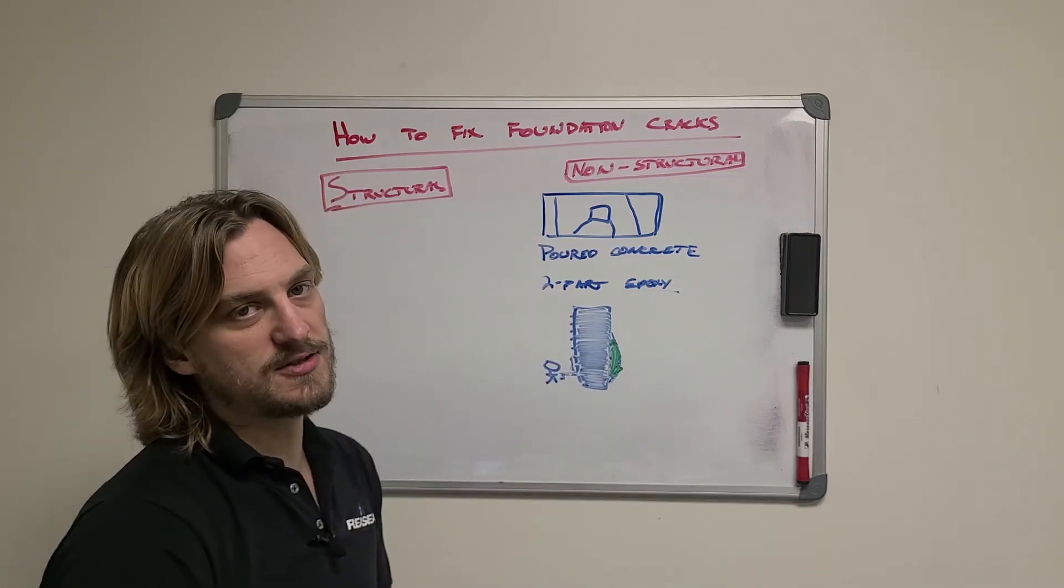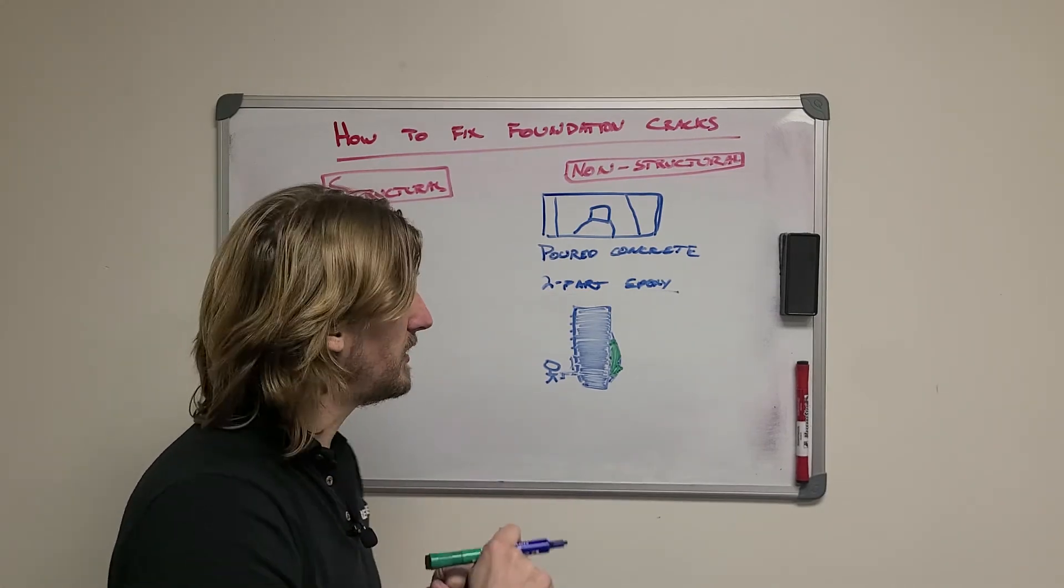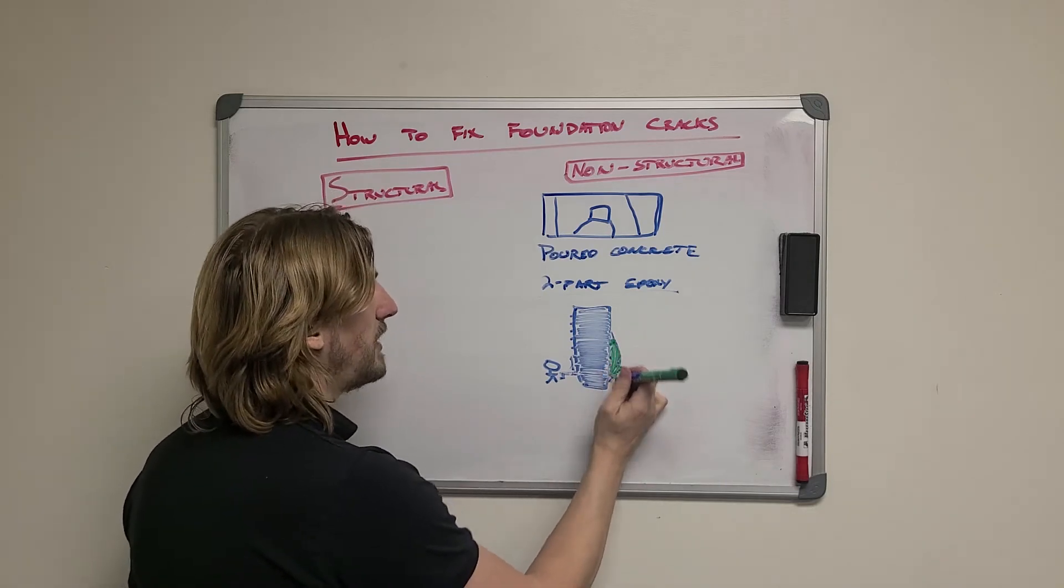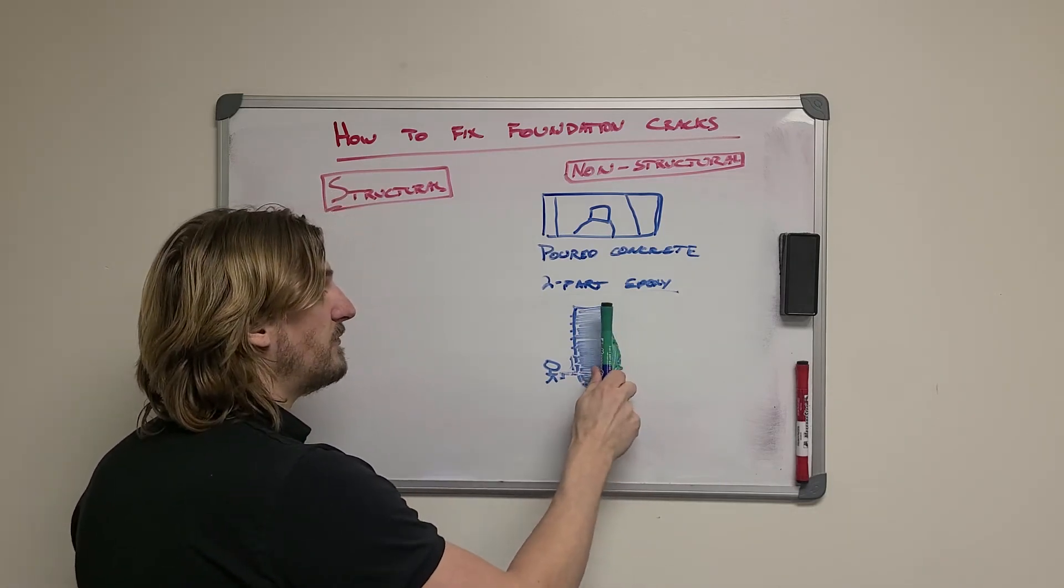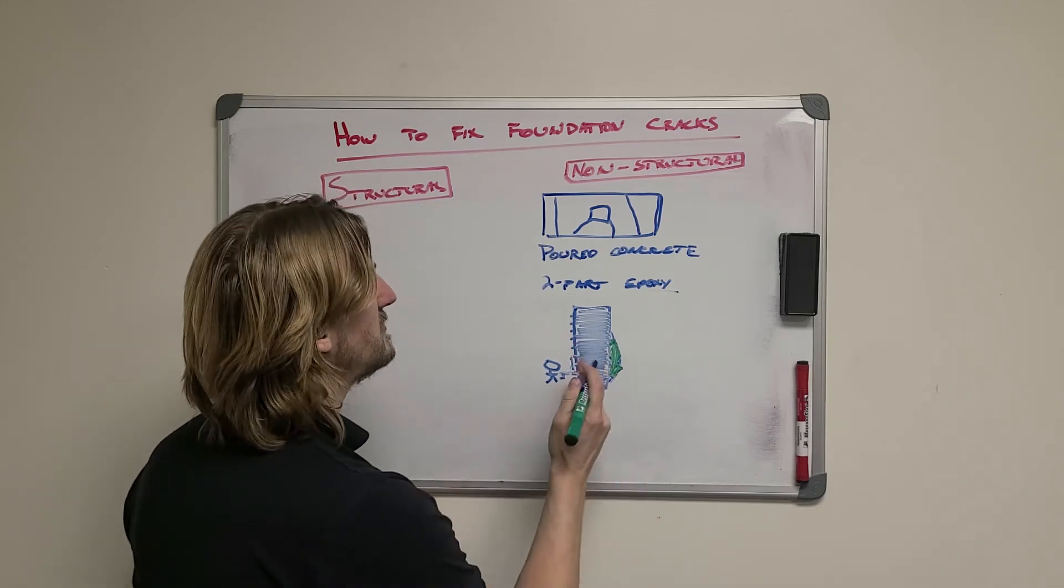That two-part epoxy is really important because it doesn't expand and is a lot stronger than the polyurethane repairs. So we really only want to be putting that polyurethane to fill up the void behind the foundation wall while the epoxy is used inside the concrete.